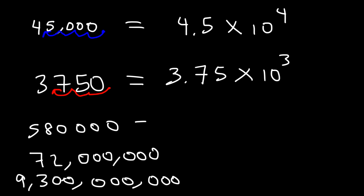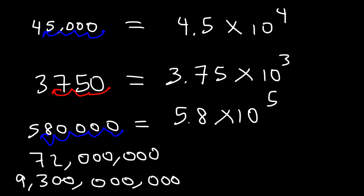Now let's move on to the next one. I want the decimal point to be between the 5 and the 8, so I'm going to move it 5 units to the left. Therefore, this is going to be 5.8 times 10 to the 5.